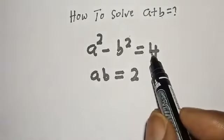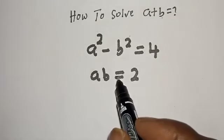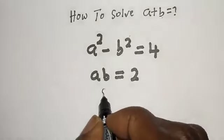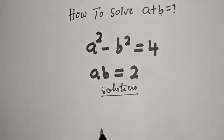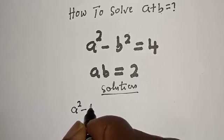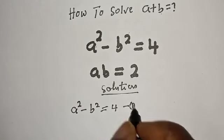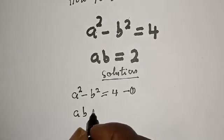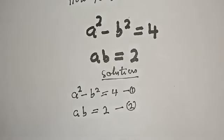a squared minus b squared is equal to 4, and ab is equal to 2. We have a squared minus b squared is equal to 4 — let's call this equation 1. Then ab is equal to 2 — let's call this equation 2.